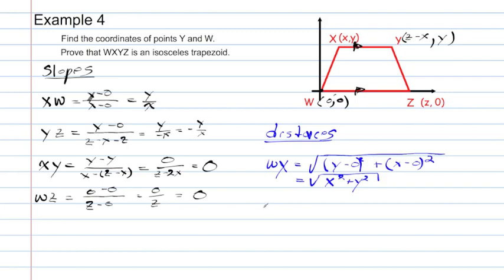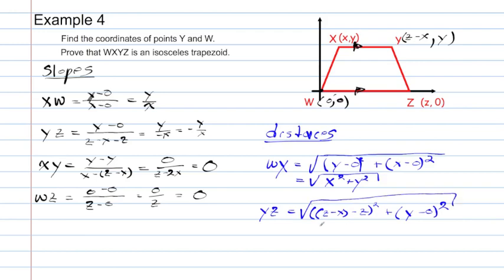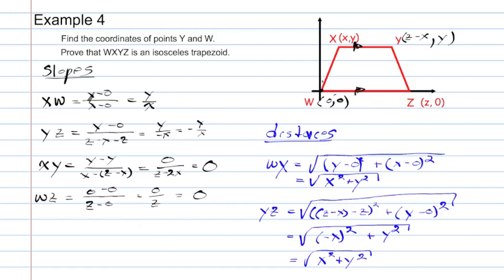Finding the distance of YZ: starting with the x-coordinates, it's (z minus x) minus z, squared, plus (y minus 0) squared. When we simplify, (z minus x minus z) gives negative x. So under the radical we have (negative x) squared plus y squared, which simplifies to x squared plus y squared. So the distances of WX and YZ are equal. Therefore, WXYZ is an isosceles trapezoid by definition.